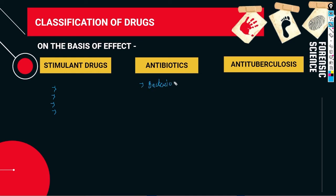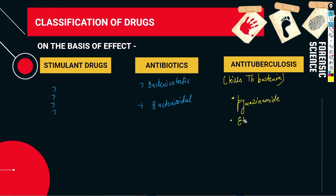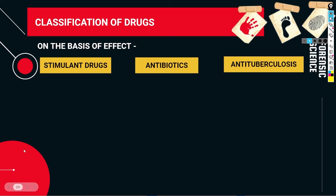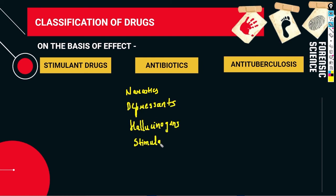Next let's talk about antibiotics — divided into bacteriostatic and bactericidal. The last category is anti-tuberculosis drugs, which kill tuberculosis bacteria. Examples include pyrazinamide and isoniazid.